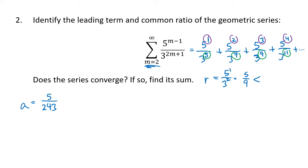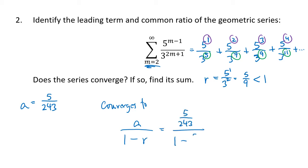Since 5 ninths is positive and less than 1, this series converges. It converges to a divided by 1 minus r. With a equal to 5 over 243 and r equal to 5 ninths, we get 5 over 243 divided by 1 minus 5 ninths. Working that out and simplifying, you end up with 5 divided by 108. That's what this series converges to.